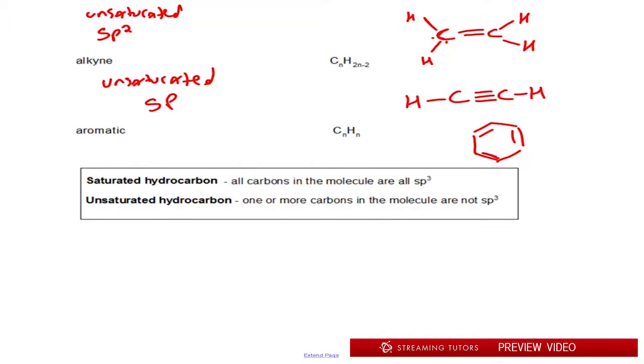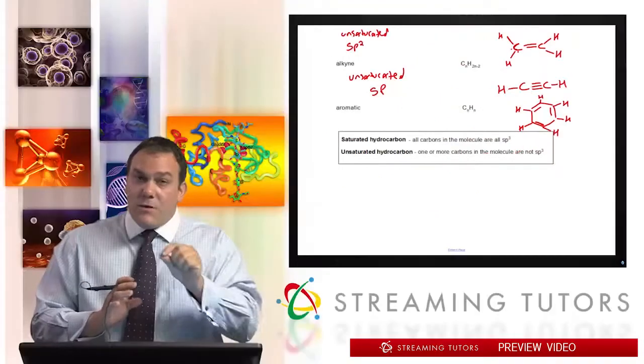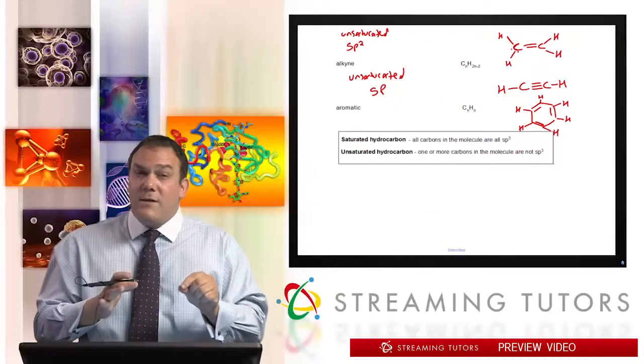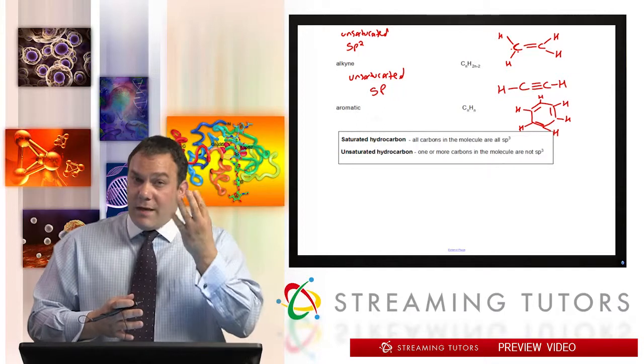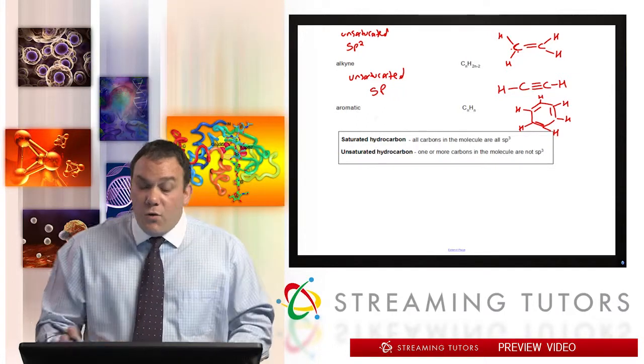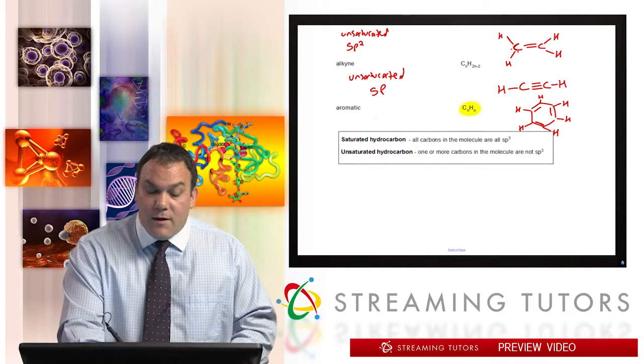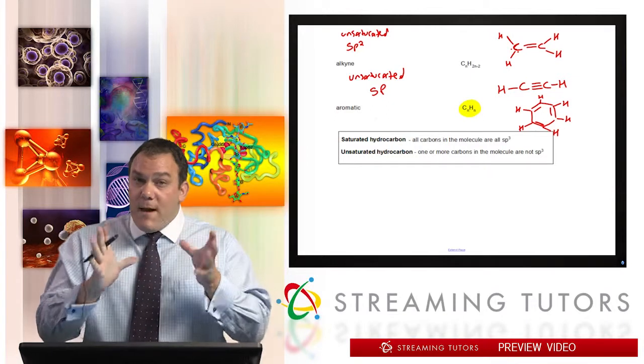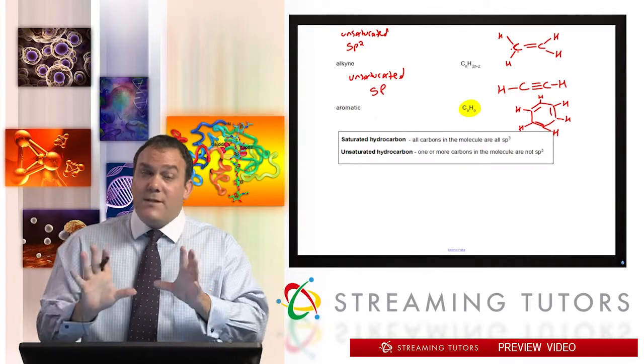So that would be an aromatic system right here. Every carbon has only one H on it, and the reason why is because if you look at each carbon, each carbon in this ring system without the H has three bonds, a double bond to one side of it and a single bond to the other. That's three bonds, so to get to four you need one H. So notice the interesting formula here: an aromatic system, and this is benzene for one example.